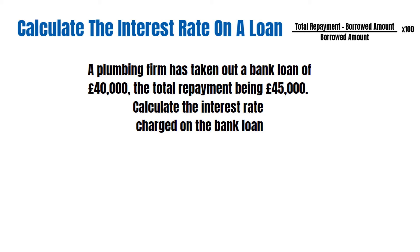So a plumbing firm has taken out a bank loan of £40,000, with the total repayment being £45,000. Calculate the interest rate charged on the bank loan. Looking at the figures in the question: the total repayment is £45,000 and the borrowed amount is £40,000.